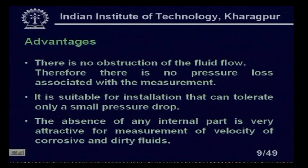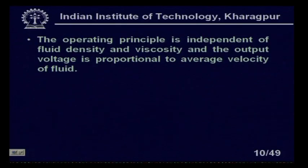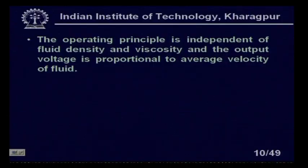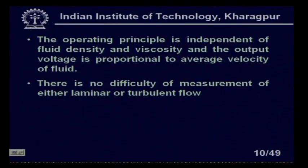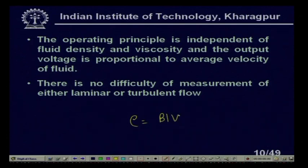The operating principle is independent of fluid density and viscosity, and the output voltage is proportional to the average velocity of the fluid. This means it is suitable for measuring both laminar and turbulent flow. However, for different liquids at the same velocity, you will not get the same output voltage, because the equation E = V·L·B shows that as the material of the fluid changes, the relative permeability mu_r changes, changing the flux density B and thus the output.